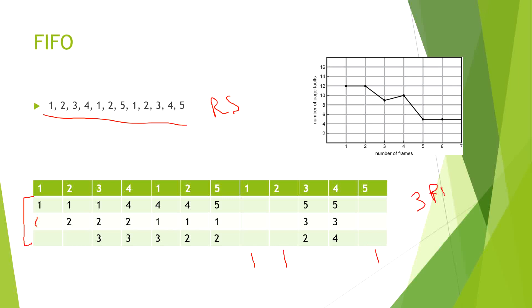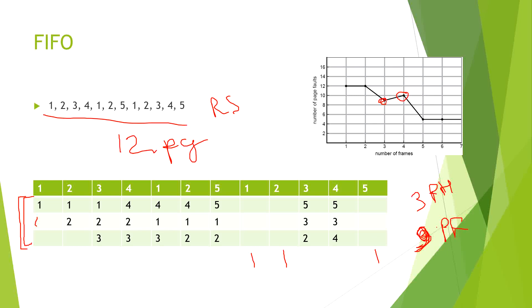There are three page hits and a total of 12 pages in the reference string, so the number of page faults is nine. Now, if instead of three frames we store four frames in the same physical memory, we get 10 page faults. This is an anomaly — with fewer page frames we get fewer page faults, but with more page frames we get higher page faults. This anomaly exists in the First In First Out algorithm and we need to remove it.